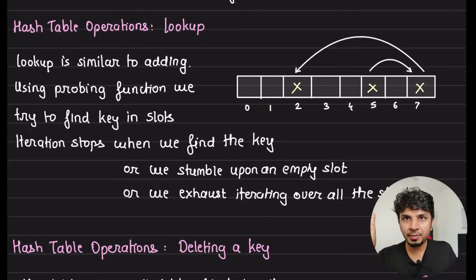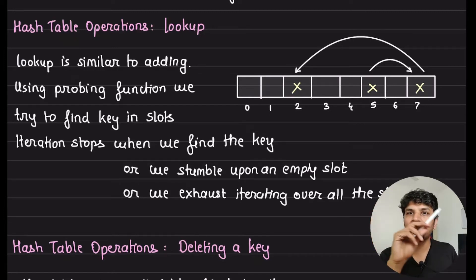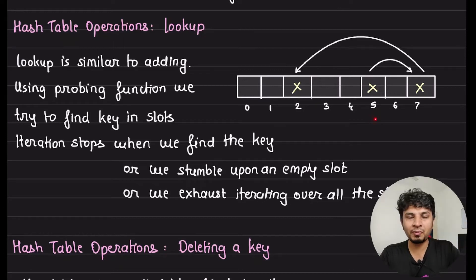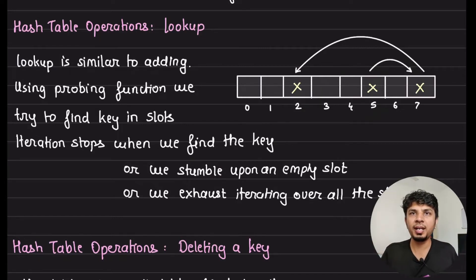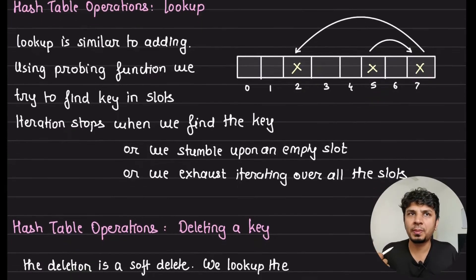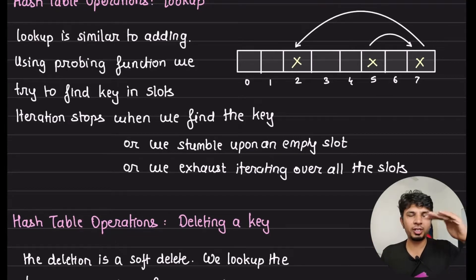Lookup is very similar to adding. To find key k, we invoke the probing function with attempt zero, which spits out some index j. We go to that index and check if the key is there; if yes, we return it. If not, we invoke the probing function again to get the next index, and continue until we find the key. The worst case is that all slots are filled and our key is not there, so we linearly access all slots one after another to eventually determine the key does not exist.